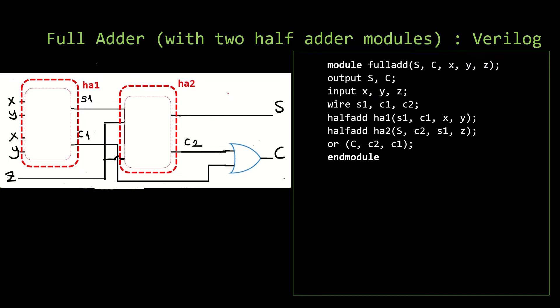We are going to define the full-adder module and give the ports inside the brackets. Then we define the outputs as capital S and capital C, inputs as X, Y, and Z.